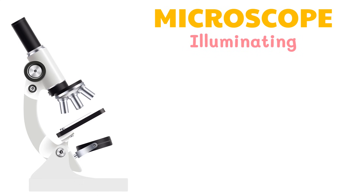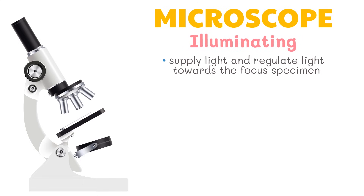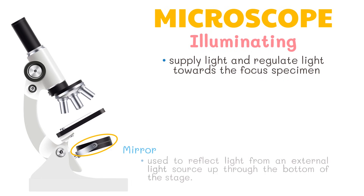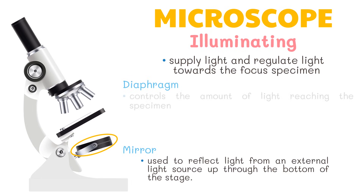The illuminating parts supply light and regulate light towards the focused specimen. First, we have the mirror. This is used to reflect light from an external light source up through the bottom of the stage. Next, not seen in the picture, is the diaphragm. It controls the amount of light reaching the specimen.